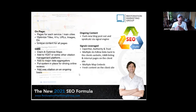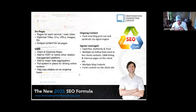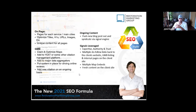This is a more condensed version of what I'm talking about, to help have all this categorized better for you guys — the on-page, the ongoing content, the Google My Business, and then the signals: the E-A-T, the expertise, authority, and trust. All of this ties into that, and all these are a piece of the puzzle, as I showed you guys.